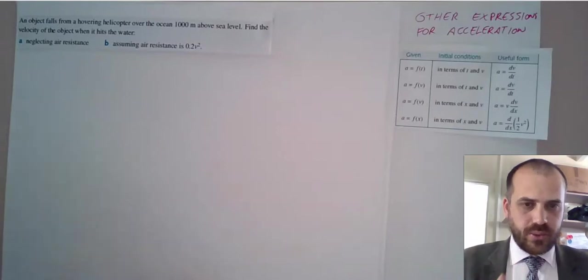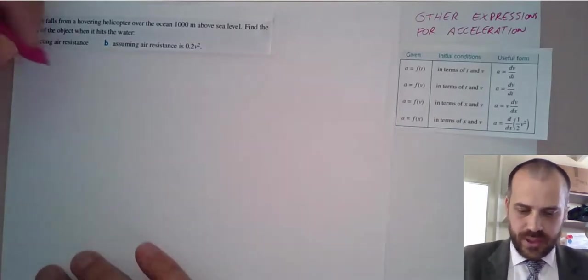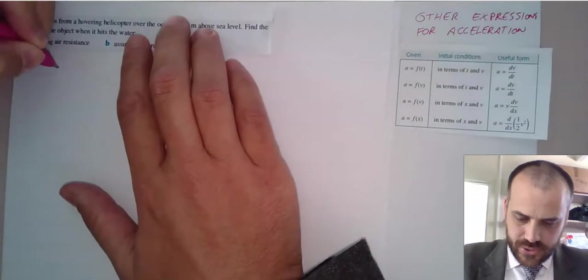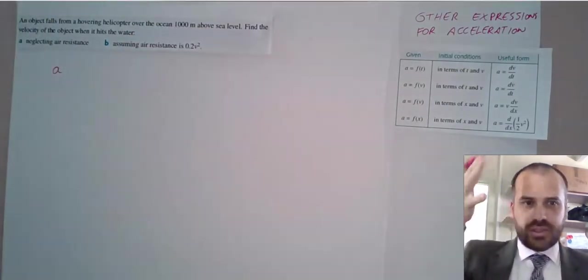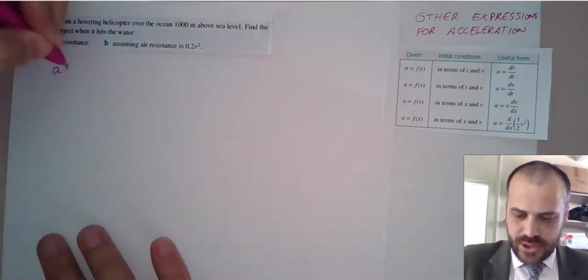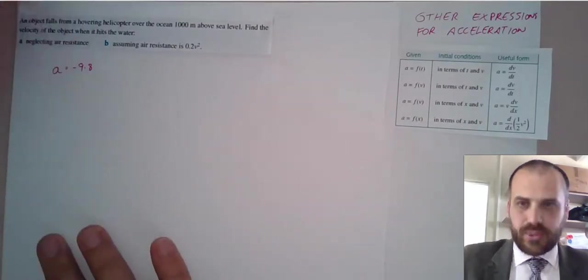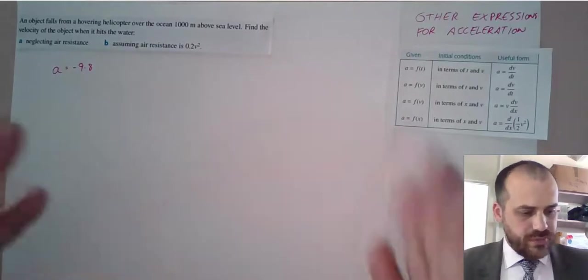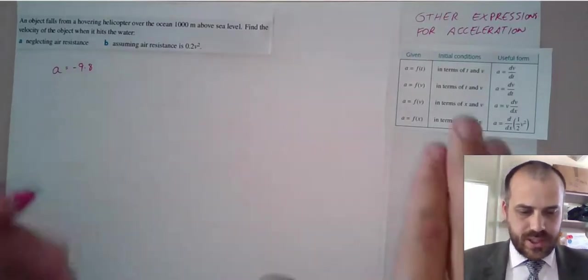Okay, so acceleration function, right? Let's think about our acceleration function for a second. It's an object that just gets dropped. So we should know that acceleration is equal to negative 9.8. Now, which of these is going to help us here?